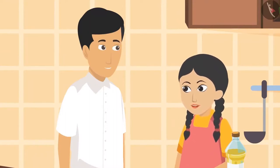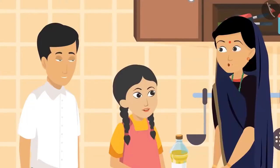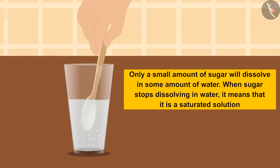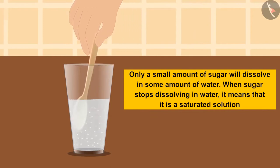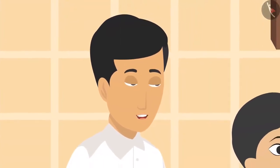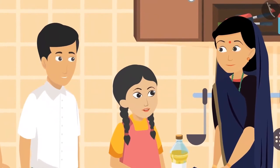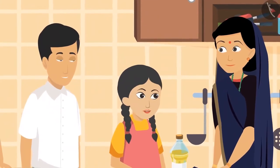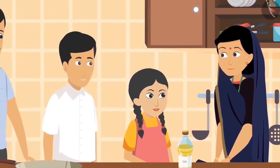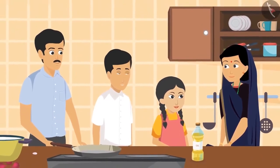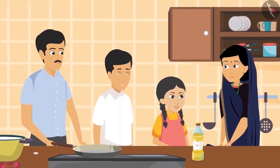Mother heard this and explained: the solution had become a saturated solution. Only a small amount of sugar will dissolve in a given amount of water. When sugar stops dissolving in water, it means that it is a saturated solution. Everyone laughed and got ready to eat. Today, Ria and Sahil learned many things while helping their parents. You can also learn many things about science in your own home.